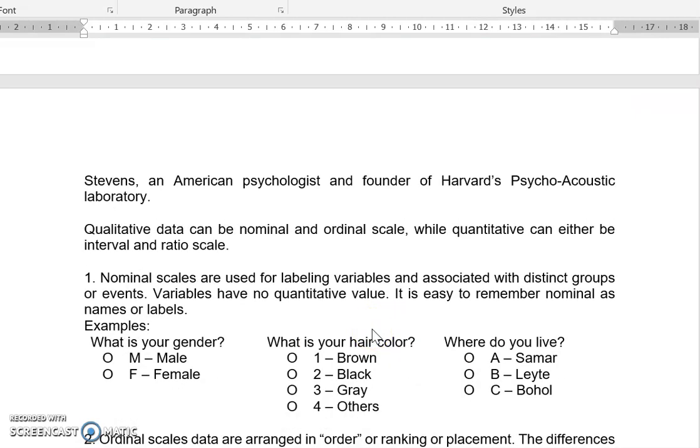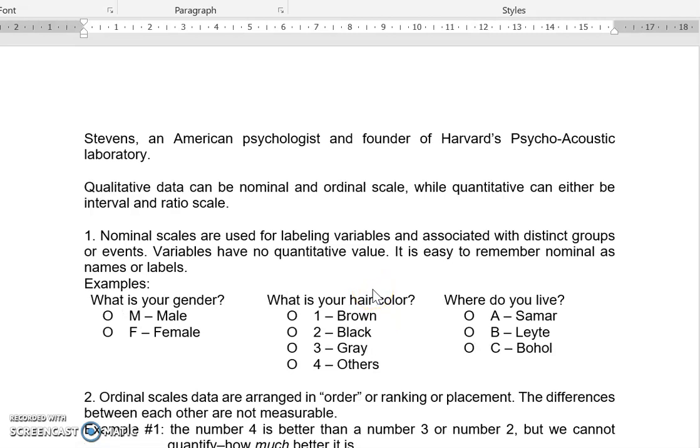Now, the first type of data, we have the nominal scales. What is nominal scales? This is used for labeling variables and associated with distinct groups or events. Variables have no qualitative value. It's easy to remember nominal as names or labels. Remember, we talked about nominal scales. Just put into your mind that when you say nominal, that is names or labels. So for example, male and female, hair color, brown, black, gray. Where do you live? Samar, Leyte, Bohol. Those are nominal scales. It's just simple names or labels.